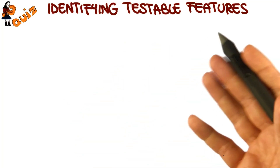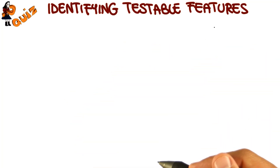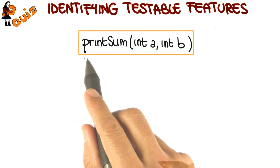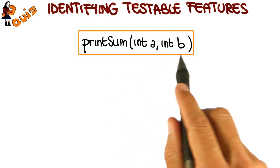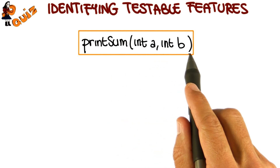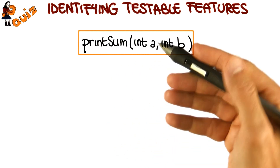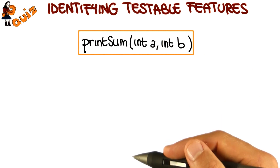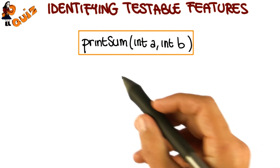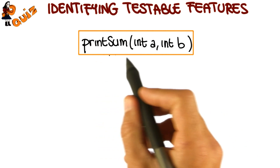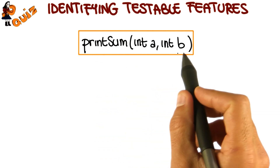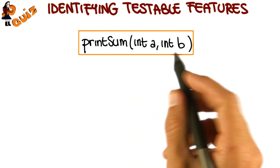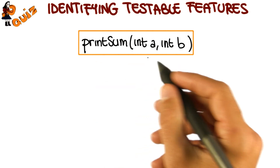Now I want to do a little quiz about identifying testable features. Let's consider this simple program called printSum. We won't see the implementation because we are doing black box testing. All we need to know is that printSum takes two integers, A and B, and prints the sum of these two numbers.